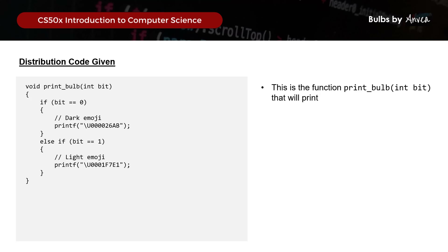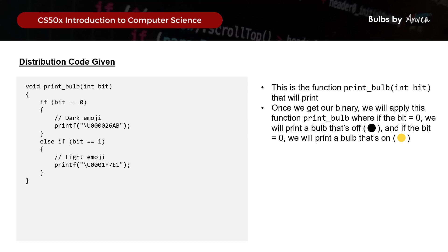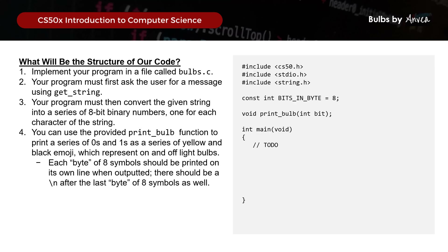We also have the printbulb function already written for us. Once we get our binary number, we'll print a bulb on or off for every single value of the binary. First we ask the user for a message using getString - we declare a string called message equals getString, prompting the user for their input. Then we need to convert this string into a series of 8-bit binary numbers, one for each character of the string.